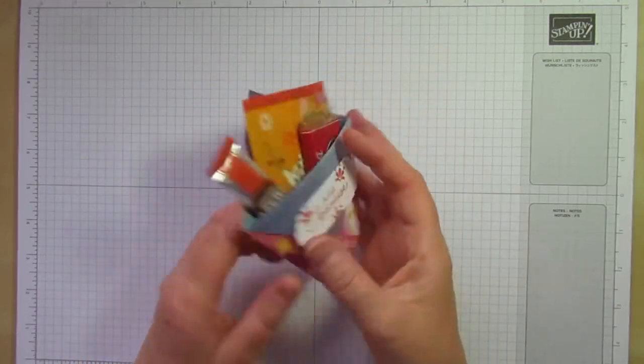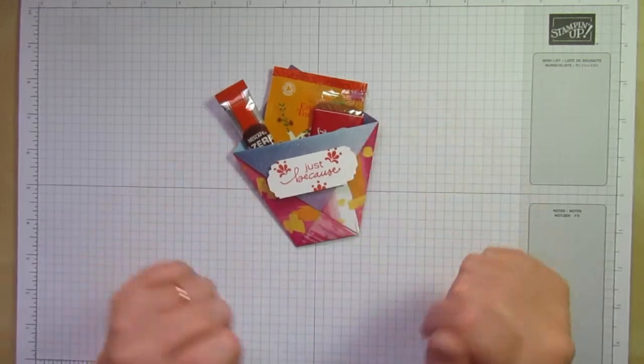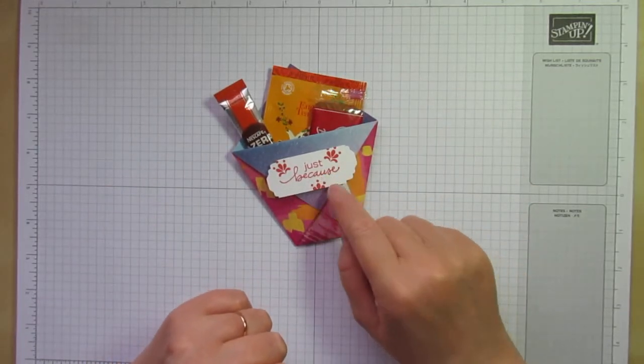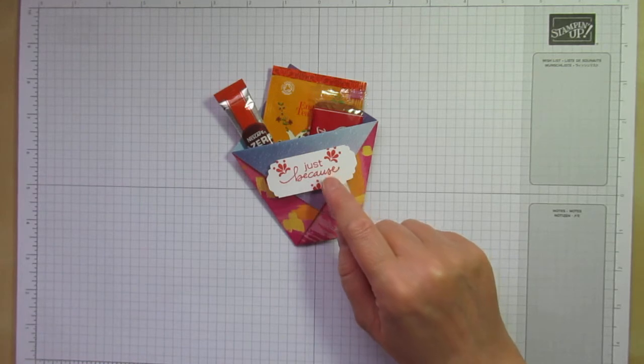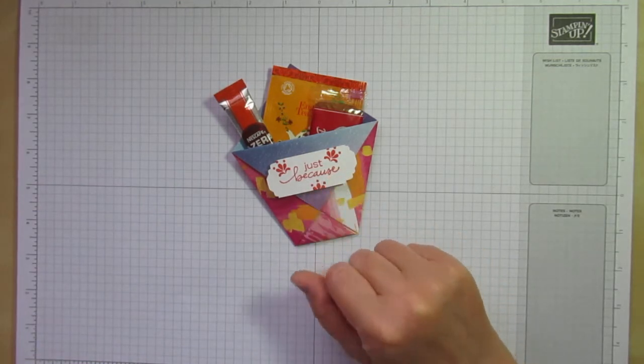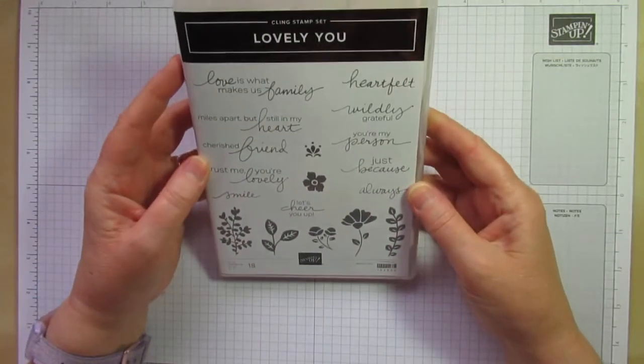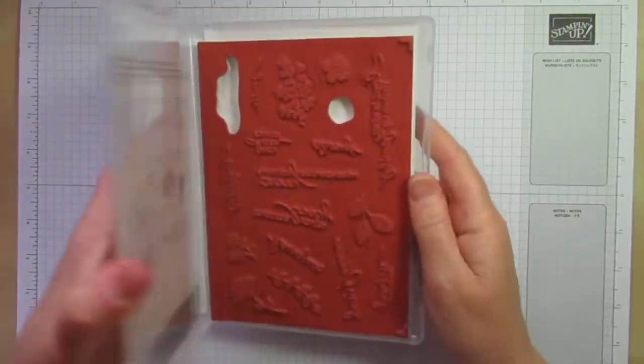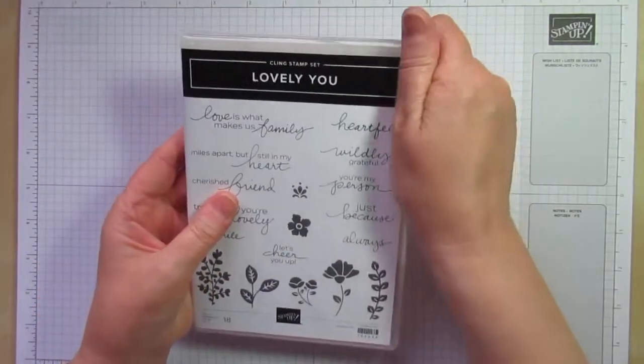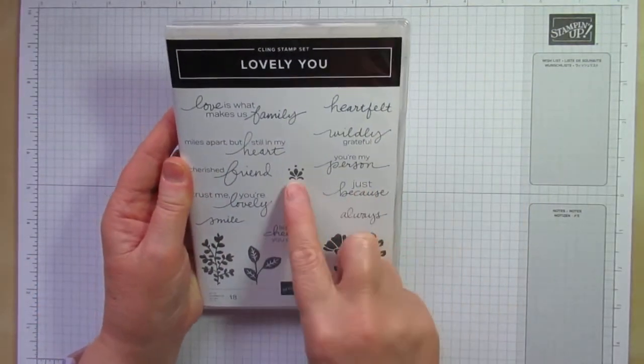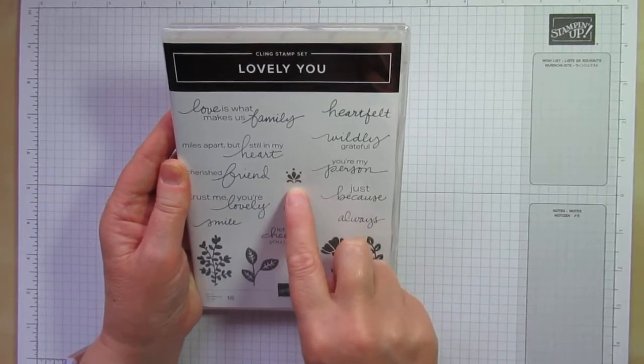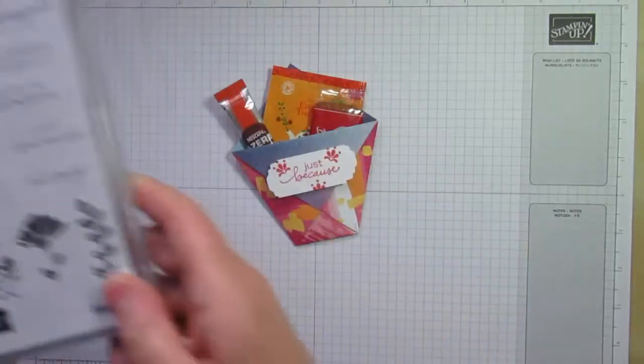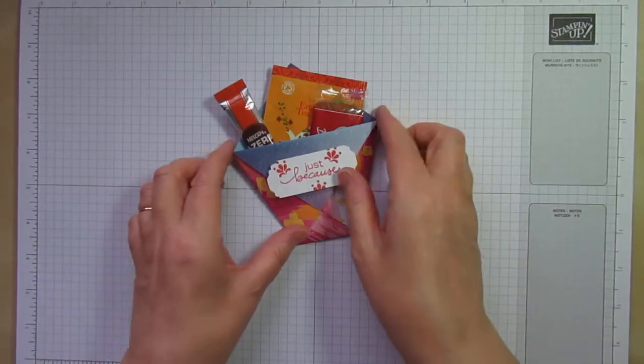This was made using the Artistry Blooms Designer Series paper and I used the Lovely You stamp set to stamp my sentiment in Calypso Coral ink. So here's the stamp set here. It is a cling stamp set so it's the red rubber and I've used the Just Because and this little fleur-de-lis type design here. So I'm going to show you how I made it.